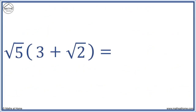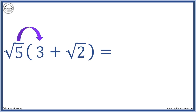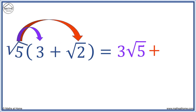For example, expand root 5 times brackets 3 plus root 2. We multiply each term in the bracket by root 5. Firstly, root 5 times 3 equals 3 root 5, plus root 5 times root 2 equals root 10.